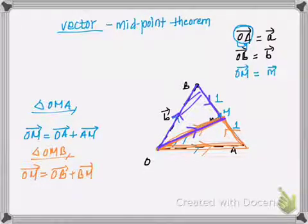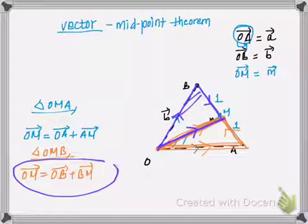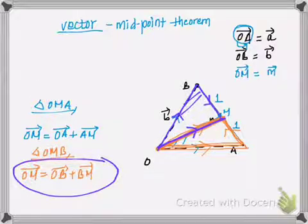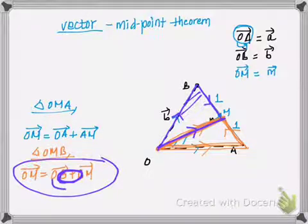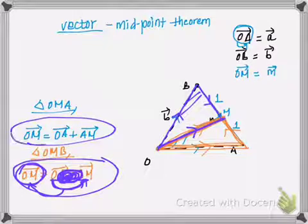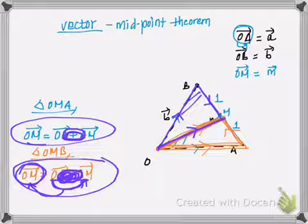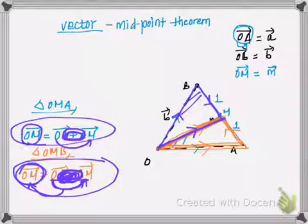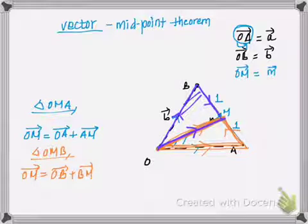Here's a small trick you can apply to check whether the vector you've written is correct or not. Looking at the vector statement — vector OM equals vector OB plus vector BM — if we get rid of the two B's, we're left with O and M, giving vector OM, which matches the left-hand side. Similarly, in the upper statement, if we remove the two A's, we get OM on both sides. It's just a small trick you can apply while solving questions based on vector geometry.